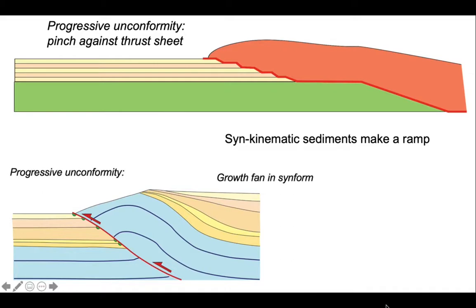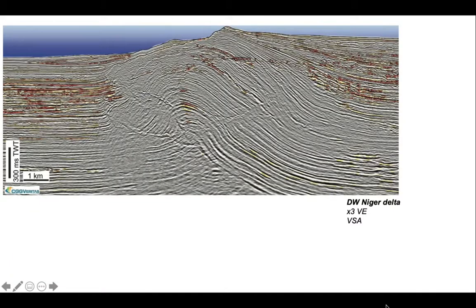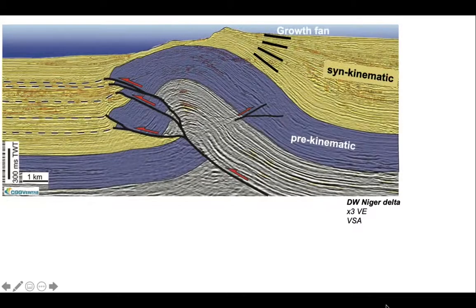Growth fan in the synform, a progressive unconformity which defines the thrust ramp ahead of the thrust sheet. Let's identify this on this other example from Nigeria. Add some interpretation. We can see the growth fan in the syn-kinematic package on top of the thrust sheet.